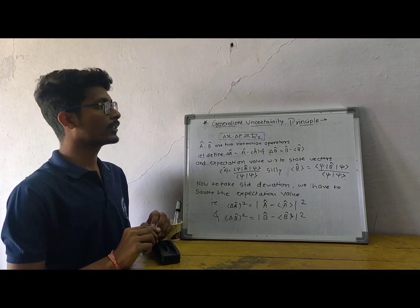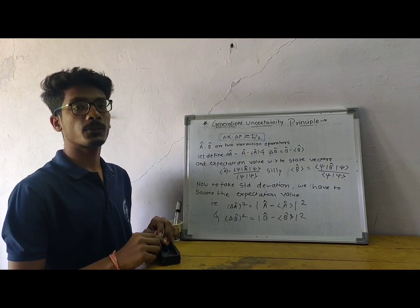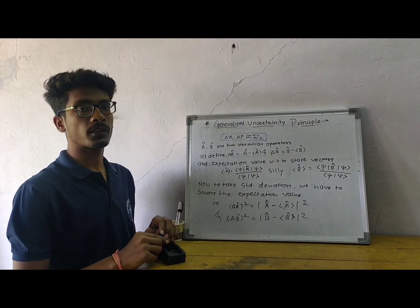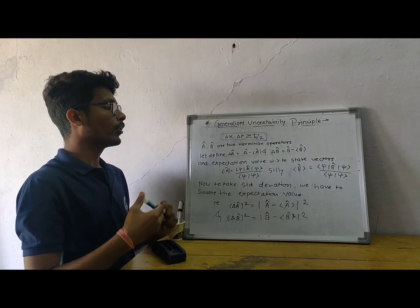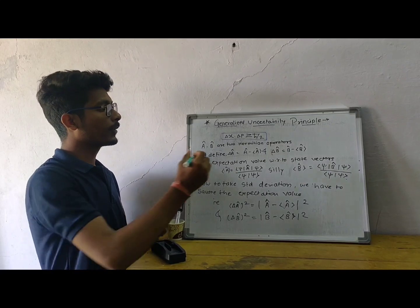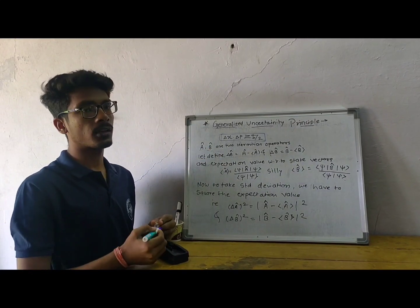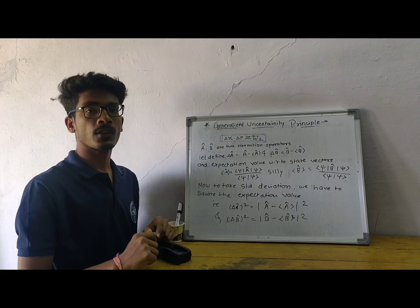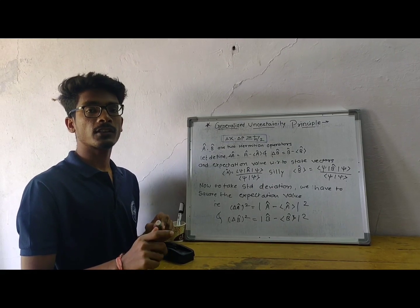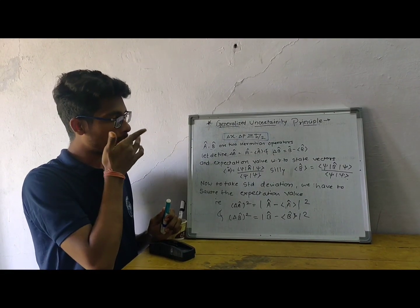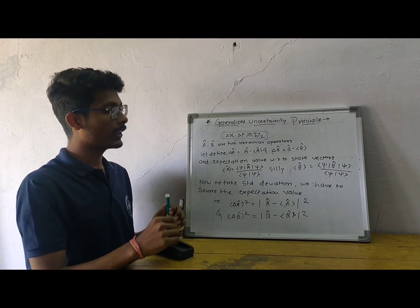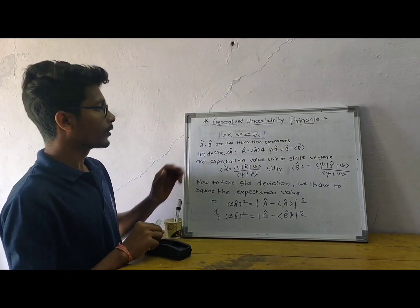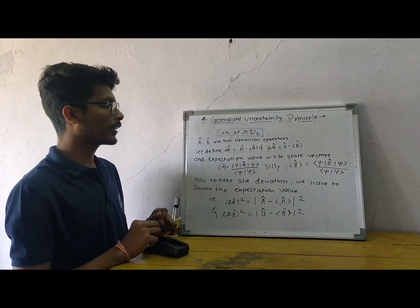Now moving towards the generalized uncertainty principle, let us take two Hermitian operators, A and B. We are taking Hermitian operators here because Hermitian operators have real eigenvalues, which are found to be more accurate when calculated experimentally. So A and B are the Hermitian operators.